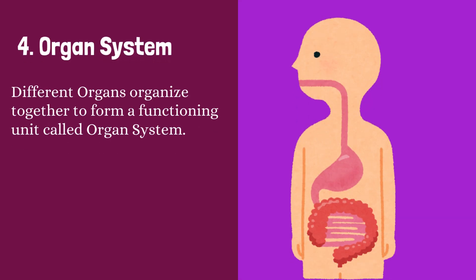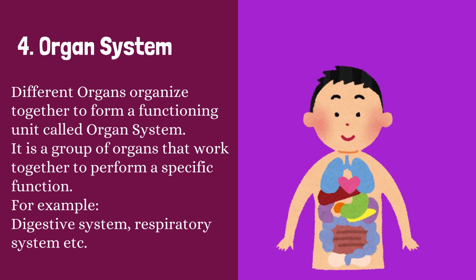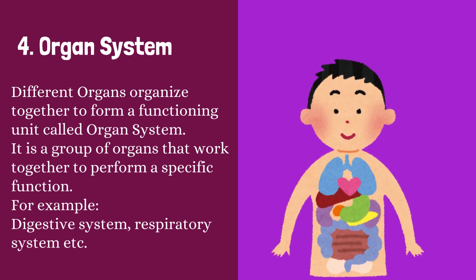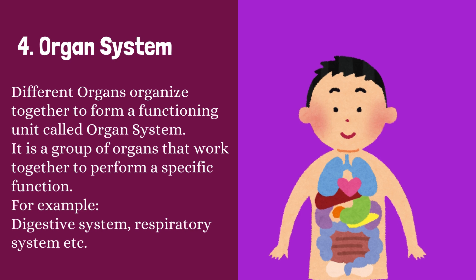Organ system. Different organs organize together to form a functioning unit called organ system. It is a group of organs that work together to perform a specific function. For example, digestive system, respiratory system.